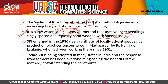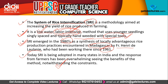SRI emerged in the 1980s as a synthesis of locally advantageous rice production practices encountered in Madagascar — which is in Africa. It was given by Father Henry de Lalani, who had been working there since 1961. Today SRI is being adopted in many states in India, and the response from farmers has been overwhelming. Since India has a large population, labor-intensive methods are not a problem; cost is also low and benefits are high, which is why SRI is popular in India. The answer is D — Paddy.